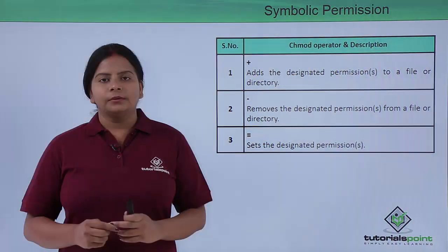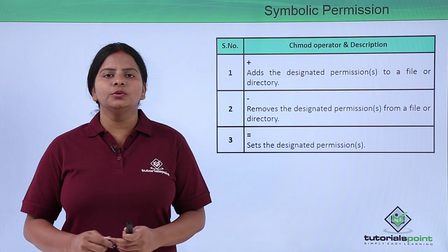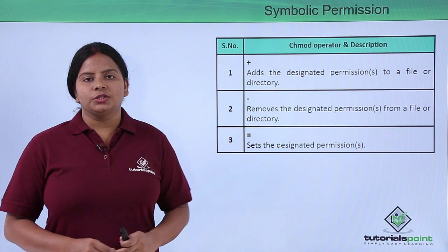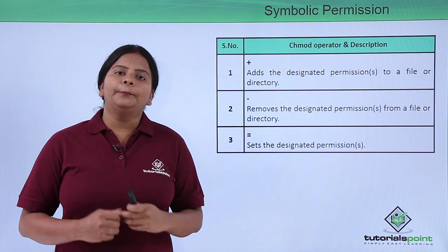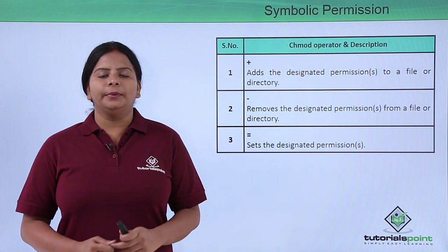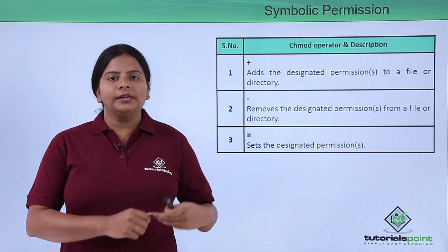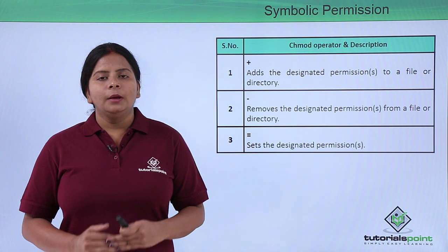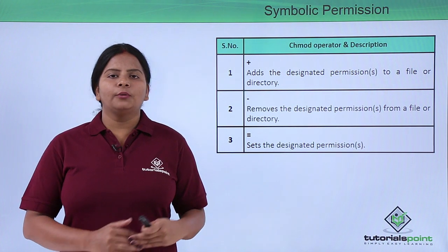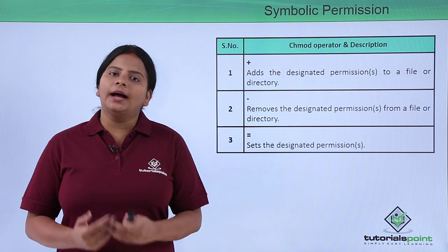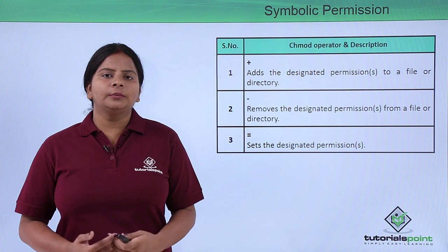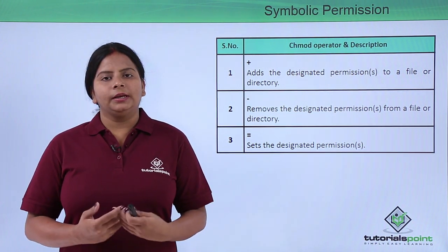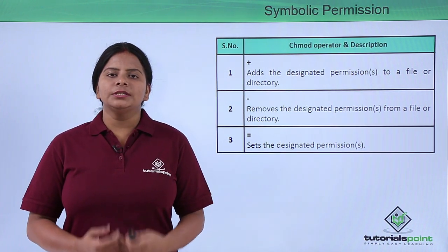Similarly, if I want to remove read permission I use hyphen r. The equals sign is used for replacing the complete permission. While plus and minus add or remove individual permissions, the equals sign lets me change the complete set of permissions all at once.